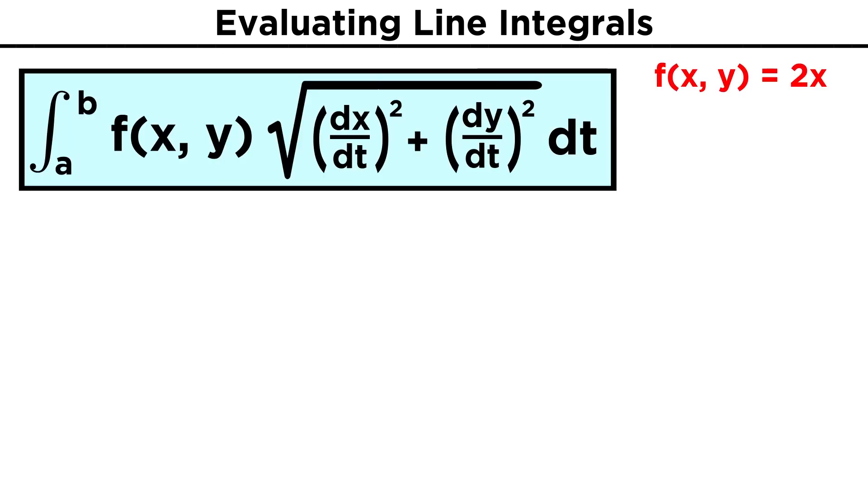As an example, consider the surface given by f of xy equals two x, and our curve C being the same as the one we discussed earlier with parametric equations, x of t equals t over two, and y of t equals t squared, letting t run from zero to six. We can go ahead and plug all of this information into our equation for line integrals, but notice that f of xy is still in terms of x, whereas we want to integrate with respect to t. We must replace the x with the appropriate expression in terms of t. Luckily the parametric equation x of t gives us just that, so we can replace x with t over two.